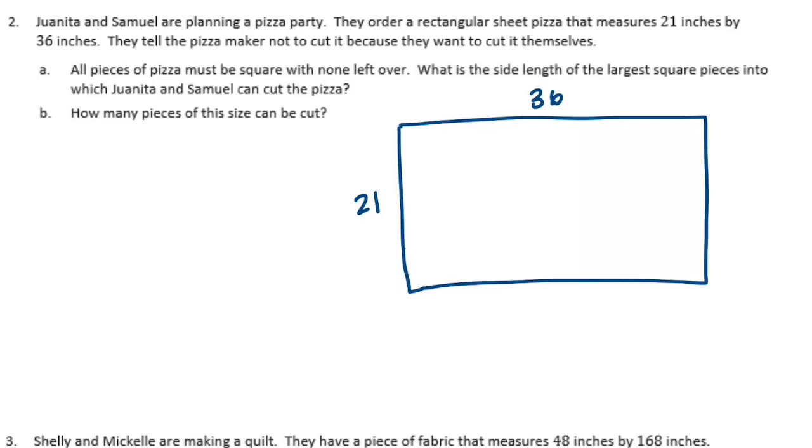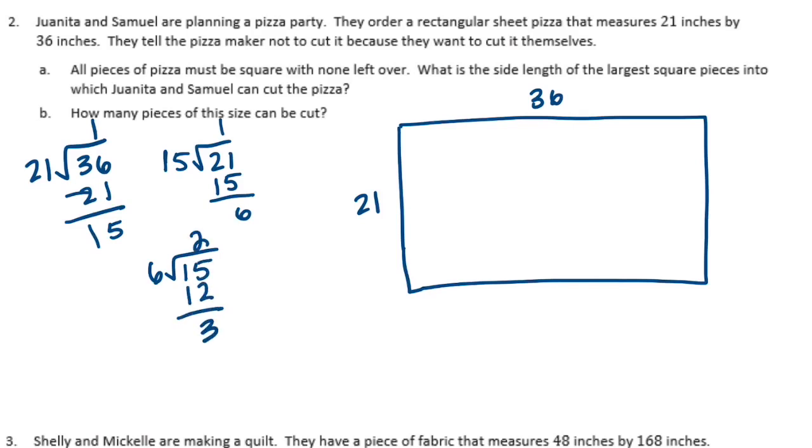Let's do 21 divided by 36. So 21 goes into 36 one time, 15 left over. So let's do 15 divided by 21, that only goes in once. We have 6 left over, 6 into 15, twice. 3 left over, and 3 into 6 would be twice. Finally, no remainder, so our greatest common factor is 3.